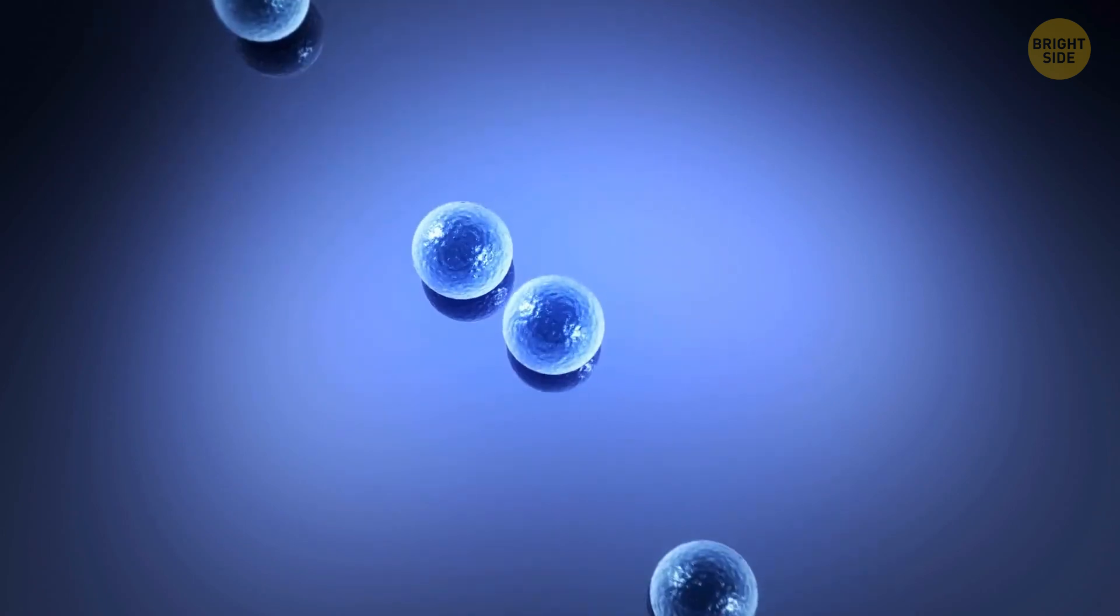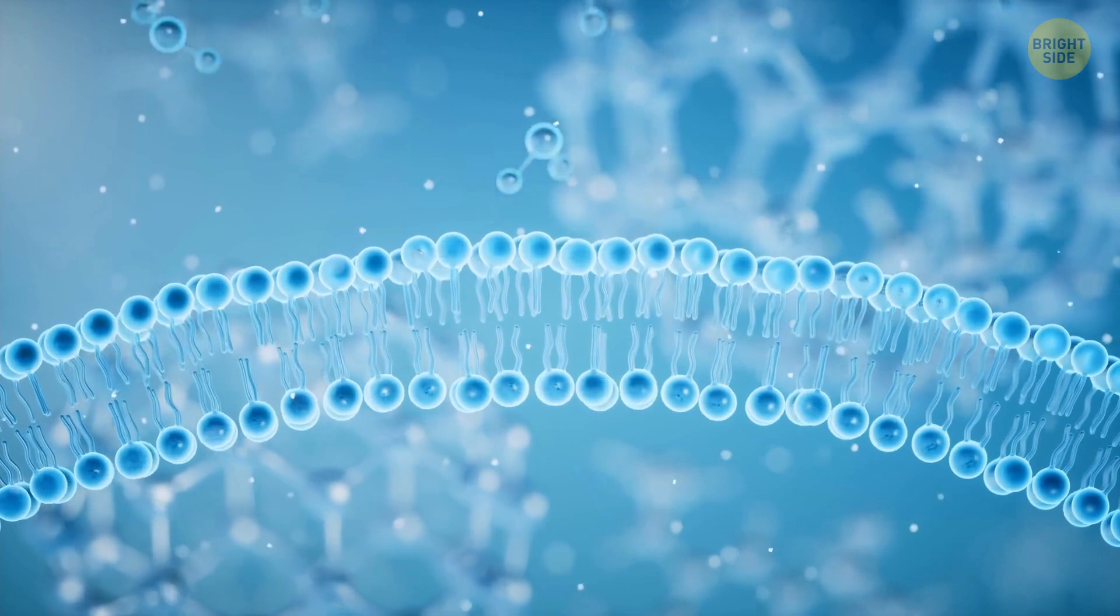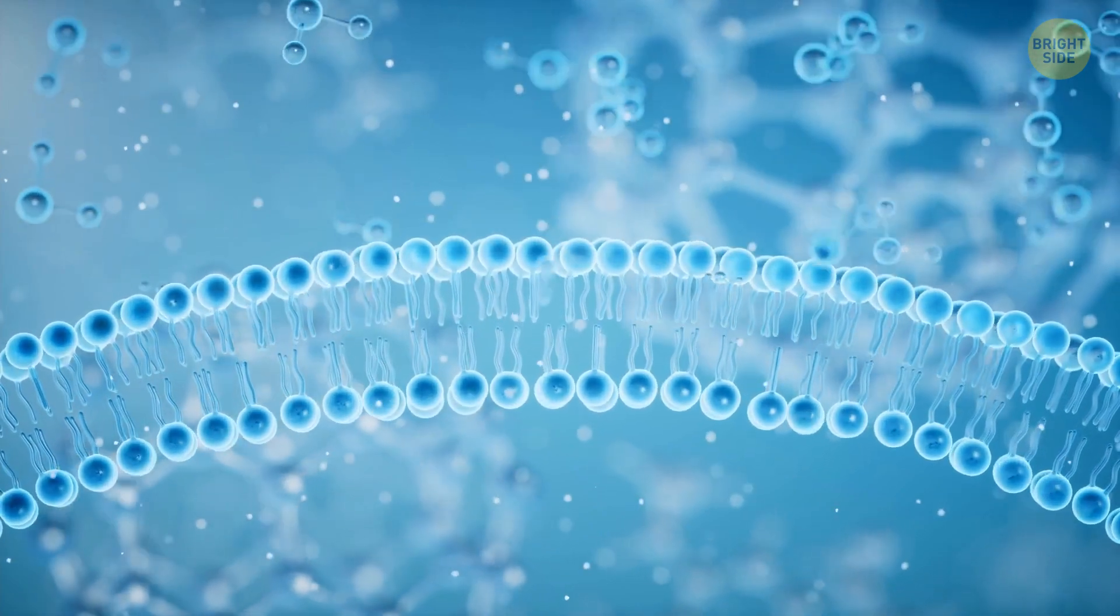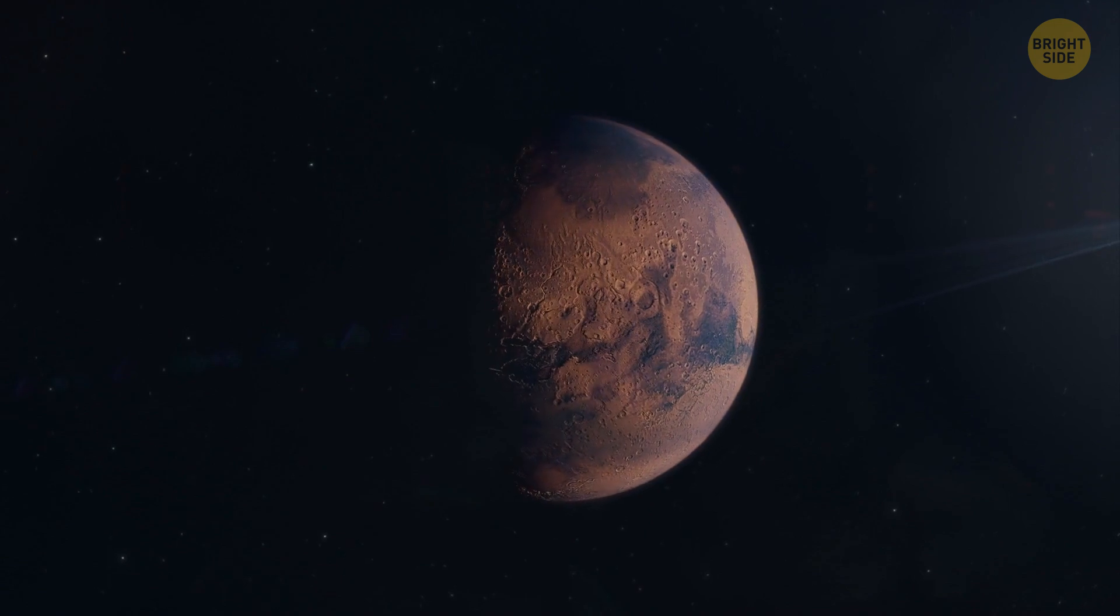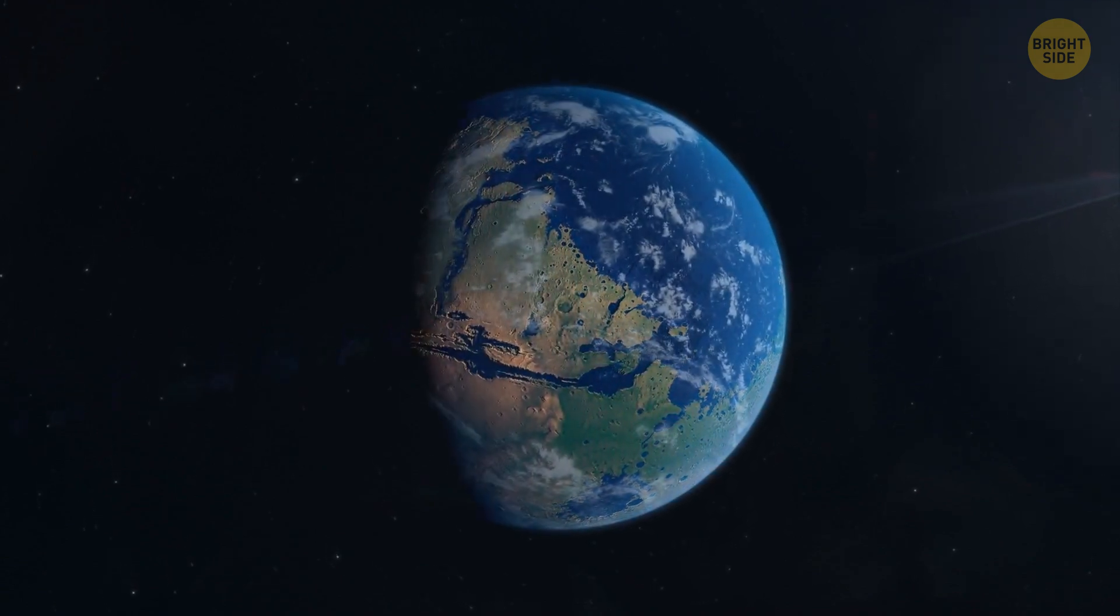Then, around 2 billion years ago, single-celled organisms decided to gobble up carbon dioxide and burp out oxygen, completely changing Earth's atmosphere. Life here transformed the very nature of our planet. And guess what? We can actually detect changes like that on other planets.